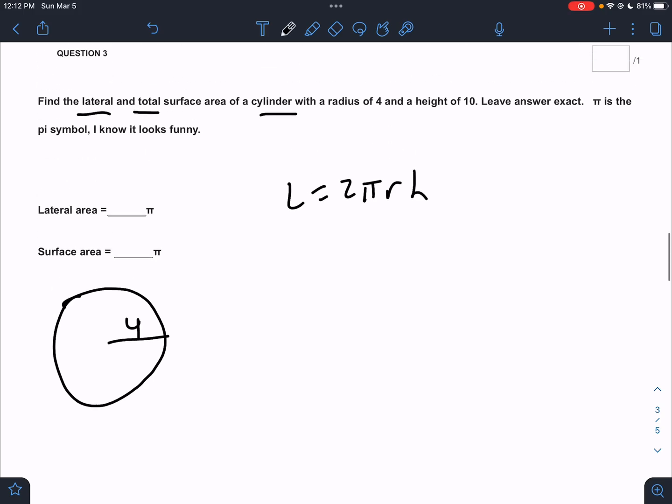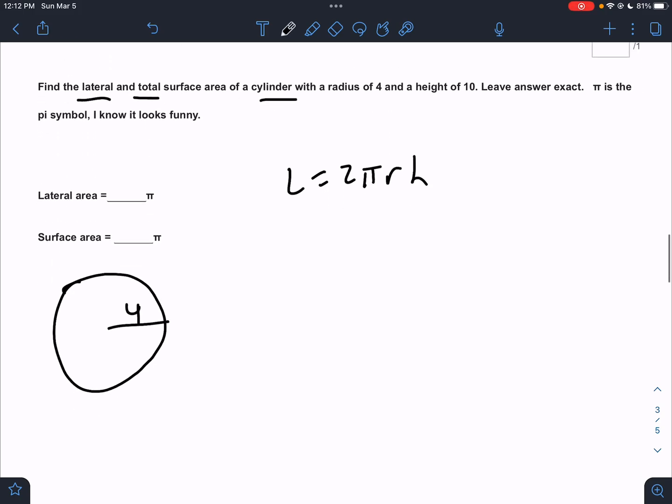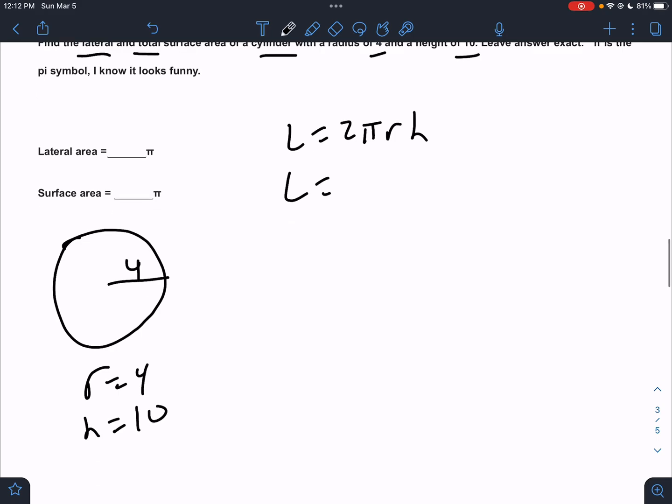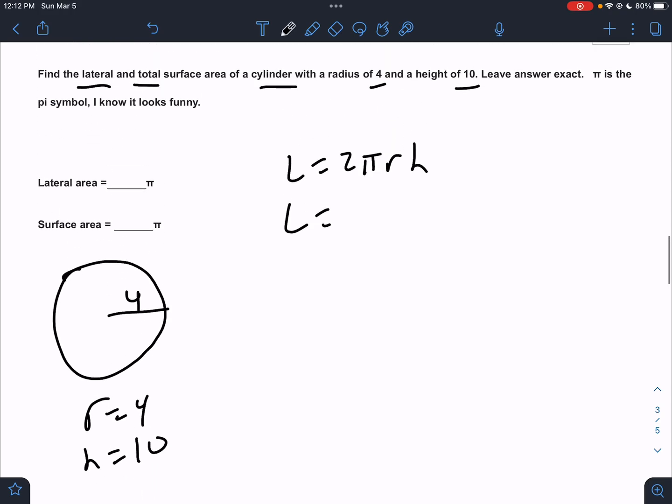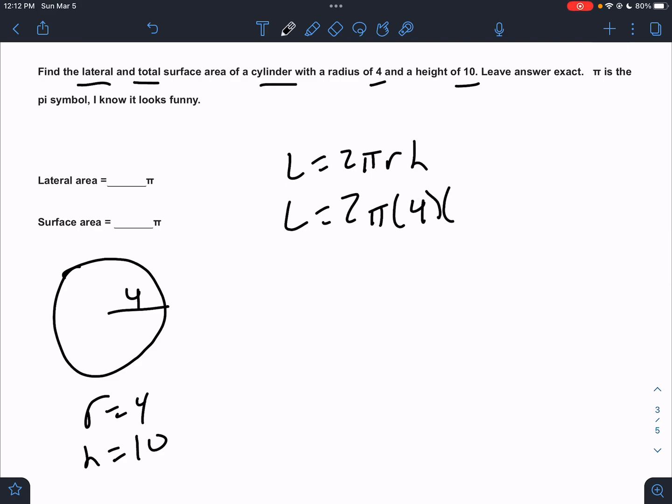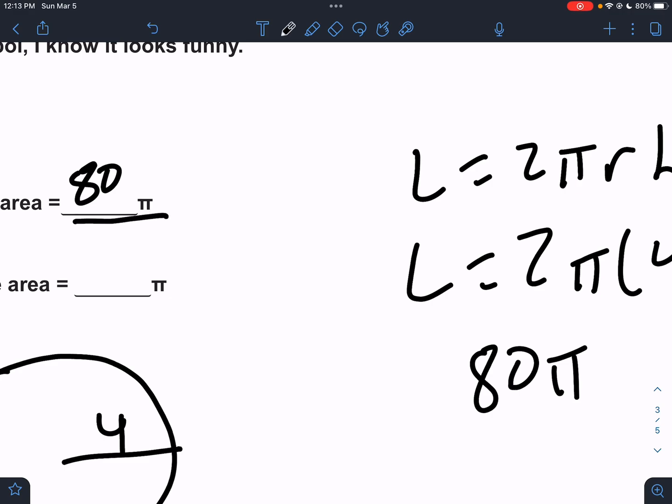So we need to know r and h for that formula. And they give us r and they give us h. So we just have it straight up. So the lateral, we know r is 4. We know h is 10. When I say h, if I drew the whole cylinder, h is the distance between the bases. That's the 10. So this would be 2π times the radius of 4 times the height of 10. That would be 40 times 2. That would be 80π. They already have the pi there. So we just write the 80.